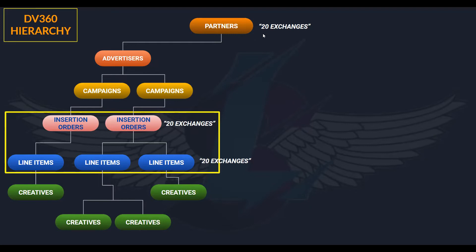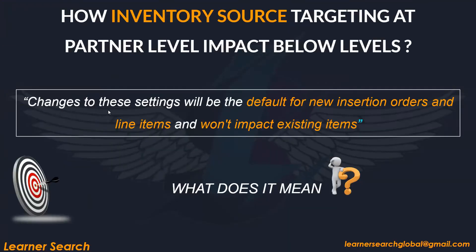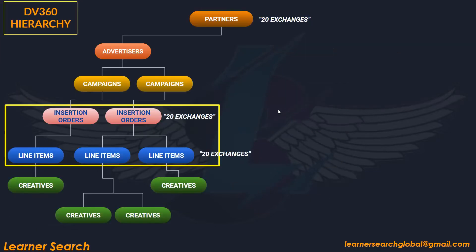Since Partner Level is targeted with 20 exchanges, the same will be repeated at Insertion Order and Line Item level. As per the note mentioned, changes to these settings will be default for new insertion orders. So whatever is created under this Partner, whenever something new is created, the same settings will be applied.